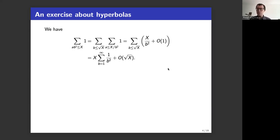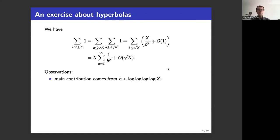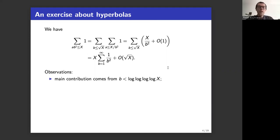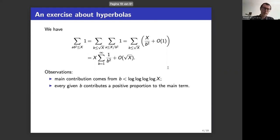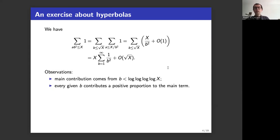This was not too difficult, but I want to make two points. First, the main contribution of the sum comes from fixing b to be smaller than any function f(x) going to infinity — so the main contribution comes from b being extremely small. Second, if we fix b, then every given b contributes a positive proportion to the main term, and this proportion decays extremely rapidly in b, which is why we can cut off b as small as we like.